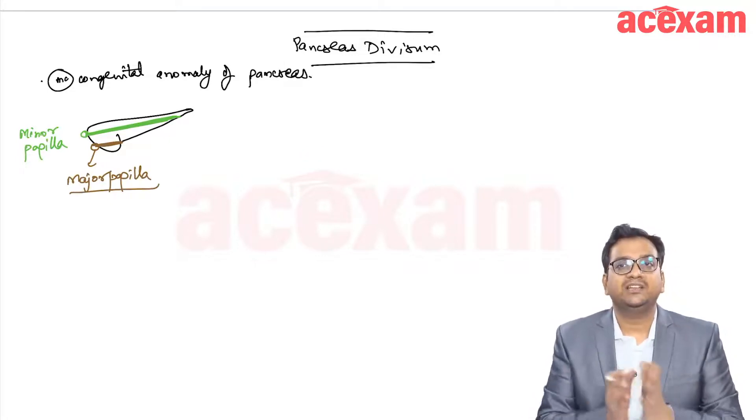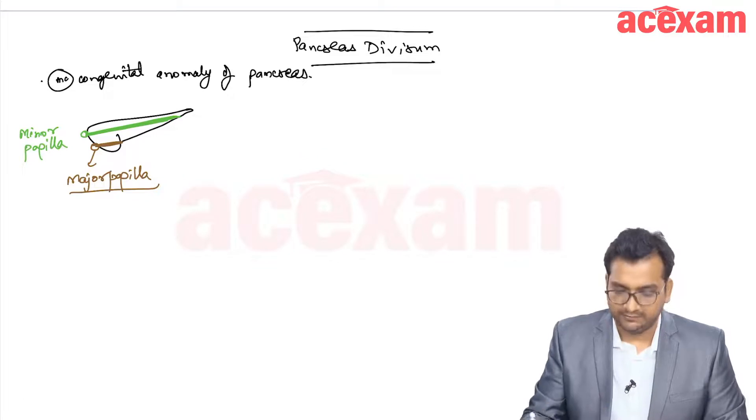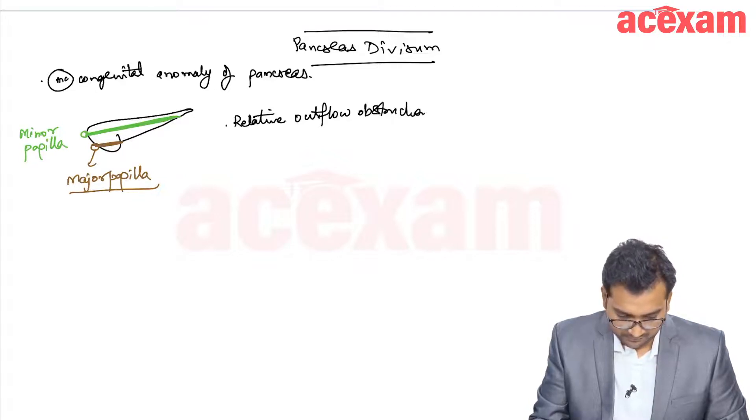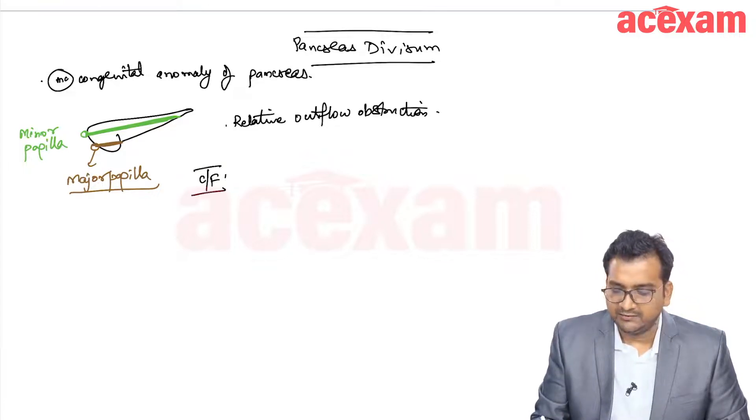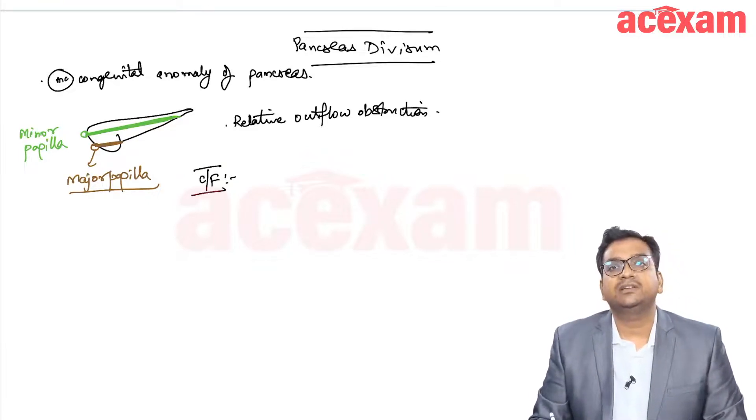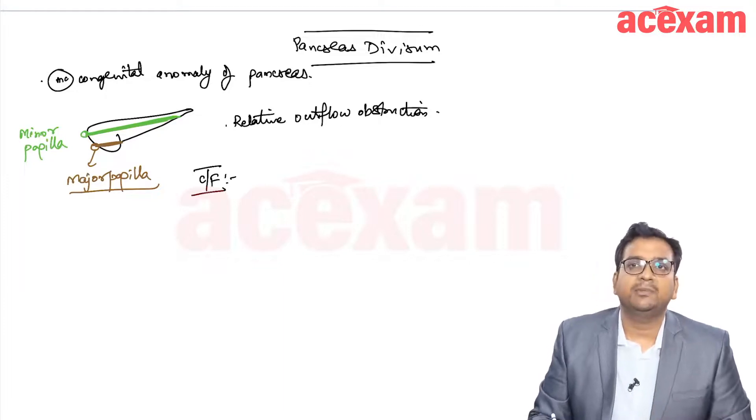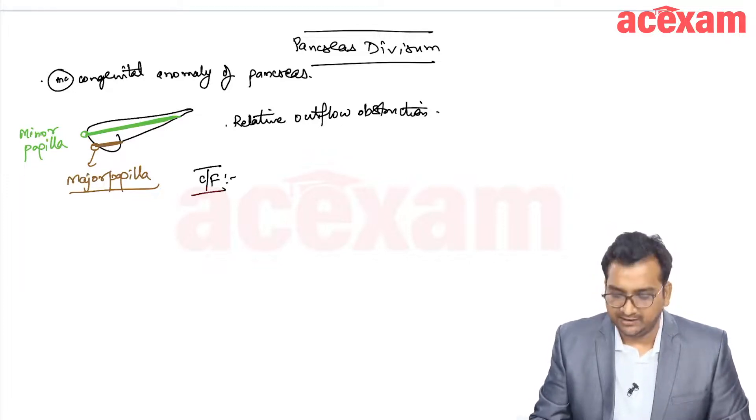There is a relative outflow obstruction. The clinical features include recurrent abdominal pain or recurrent acute pancreatitis.